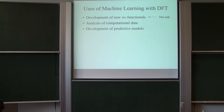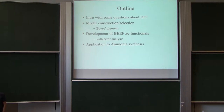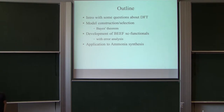Today I'll just focus on machine learning in connection with the development of exchange-correlation functionals. I'll start with some basic questions about DFT and the way DFT works. Then I'll give you an introduction to model construction and selection within the Bayesian framework — something that maybe you're familiar with, maybe not. I think it's still not quite standard curriculum, but it's fairly simple. Then I'll tell about some new functionals we've been developing with error estimation included — so-called B-functionals. At the end I'll show an example where most of the work was done at Stanford.